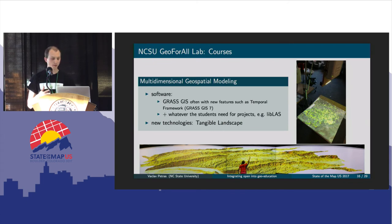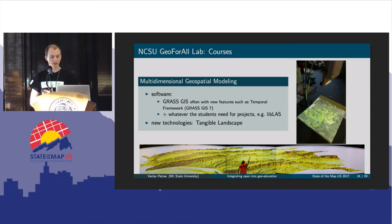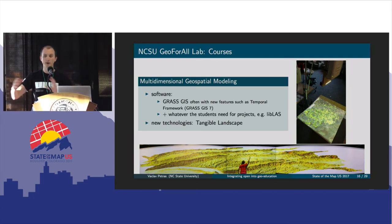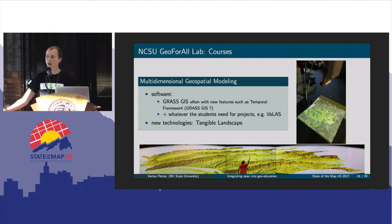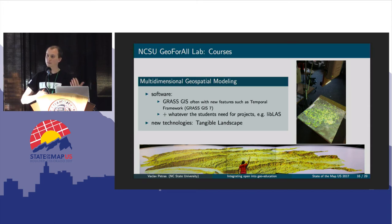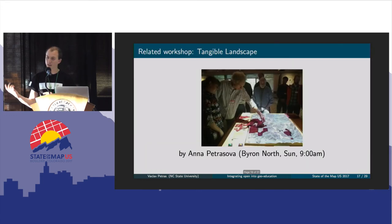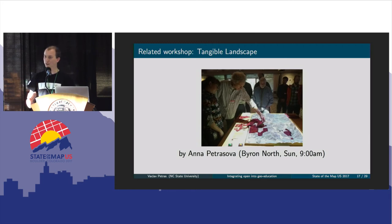In another course, Multidimensional Geospatial Modeling — which is an experimental course we don't teach every semester — we actually go a step further. We use more experimental technologies, so the students use different software packages based on the projects they are working on. We worked a lot with GRASS GIS and some temporal data management tools, and we also used Tangible Landscape technology — a cool technology you can learn about on Sunday here in this room in the morning, so that's an advertisement for another workshop.